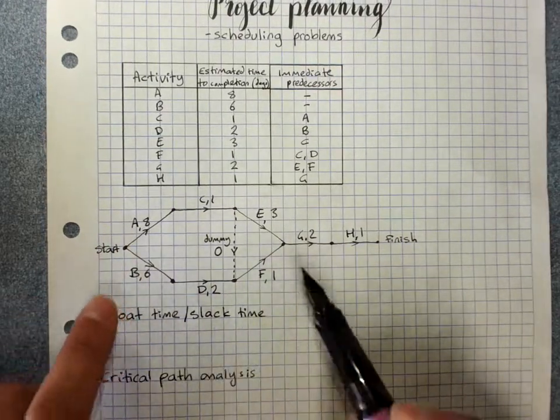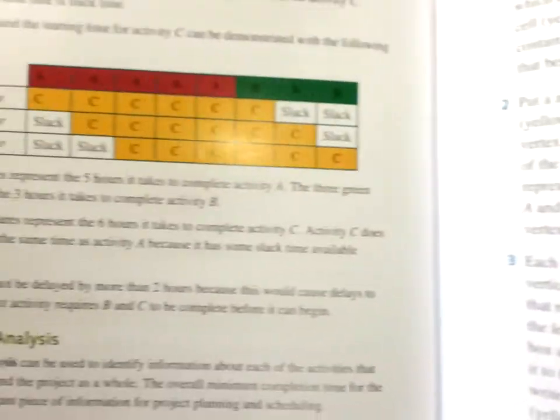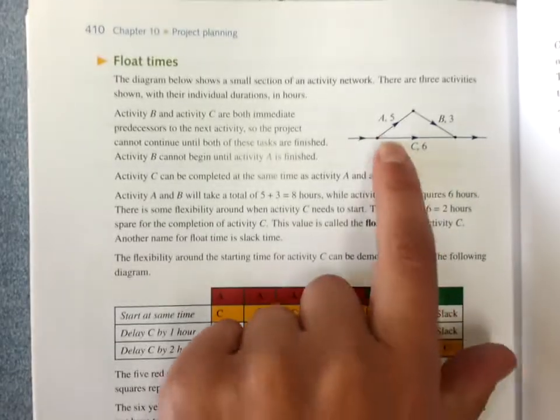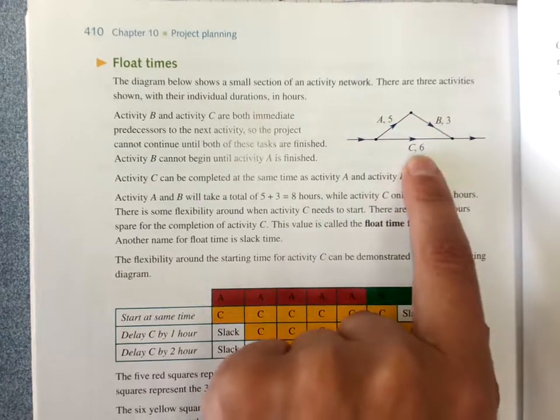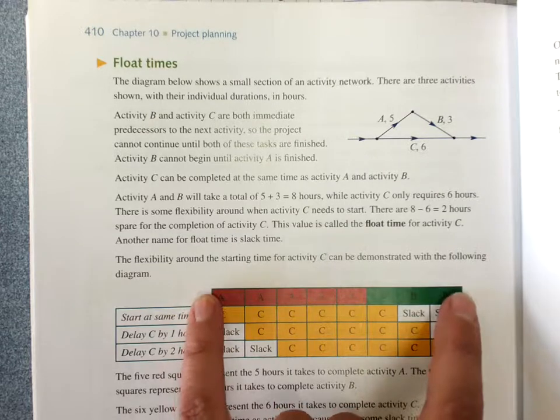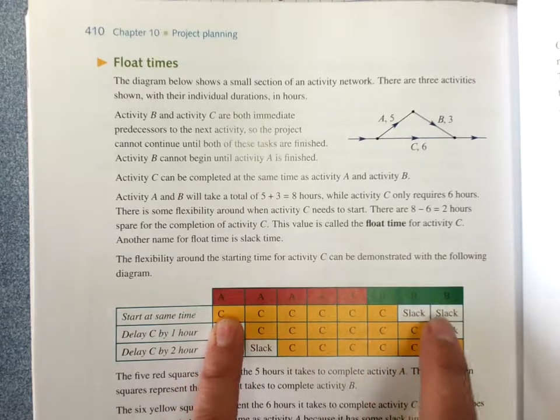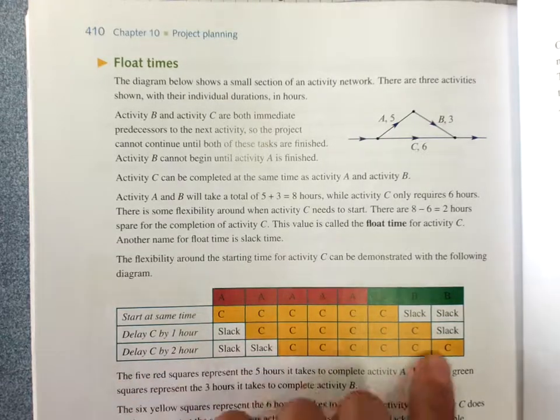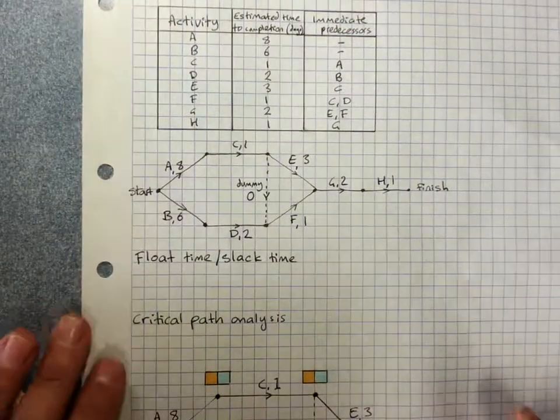So there's a three hour float time on this path here or slack time. This is a much shorter, smaller example. Here we've got to do A then B and that'll be 8 hours. C can happen separately because it doesn't require A or B and it's only 6 hours. We're going to need these 5 hours for A, we're going to need those 3 hours for B. So the earliest the whole thing can finish is 8 hours. We could start C at the same time as A and then we'd have 2 spare hours or float time or slack time at the end. We could delay C by 2 hours and they finish at the same time.